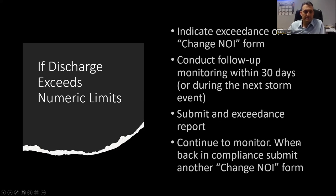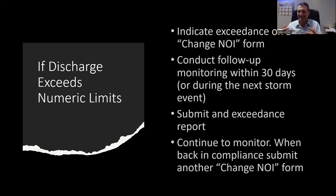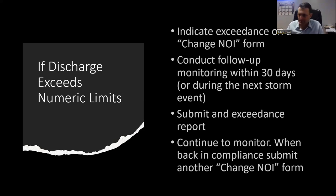If the discharge exceeds the numeric limit, you indicate an exceedance on a change NOI form through the NOI system, then conduct follow-up monitoring within 30 days or during the next storm event. This is something we deal with a lot in our semi-arid area — we barely got a sample and now we have to do another one, which might be six months to a year later. When you're back in compliance, you submit another change NOI form. You have to submit an exceedance report and continue to monitor.